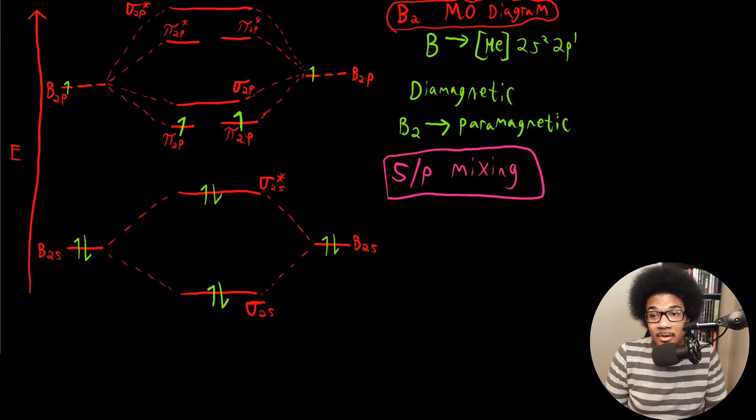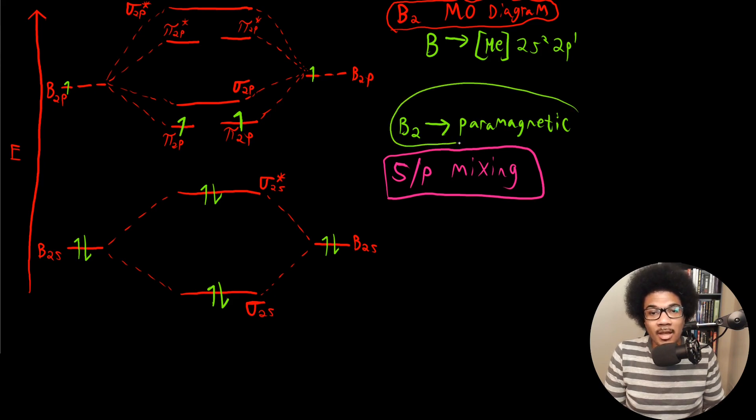Same thing here. So instead of pairing them in one pi 2P orbital, you're going to actually distribute one in each of these pi 2P orbitals. So now we actually do have unpaired electrons. So this guy is not diamagnetic, it is paramagnetic, and that actually fits with the experimental observation that B2 is paramagnetic.